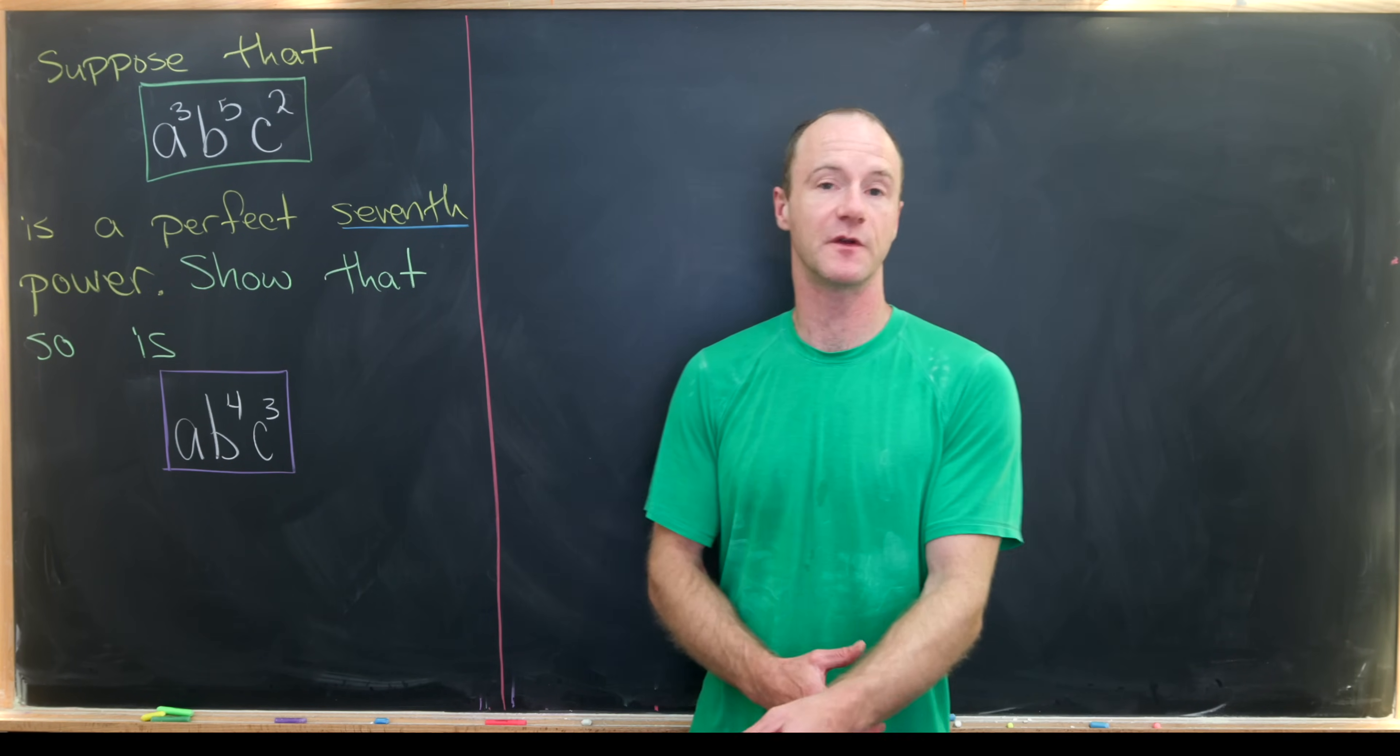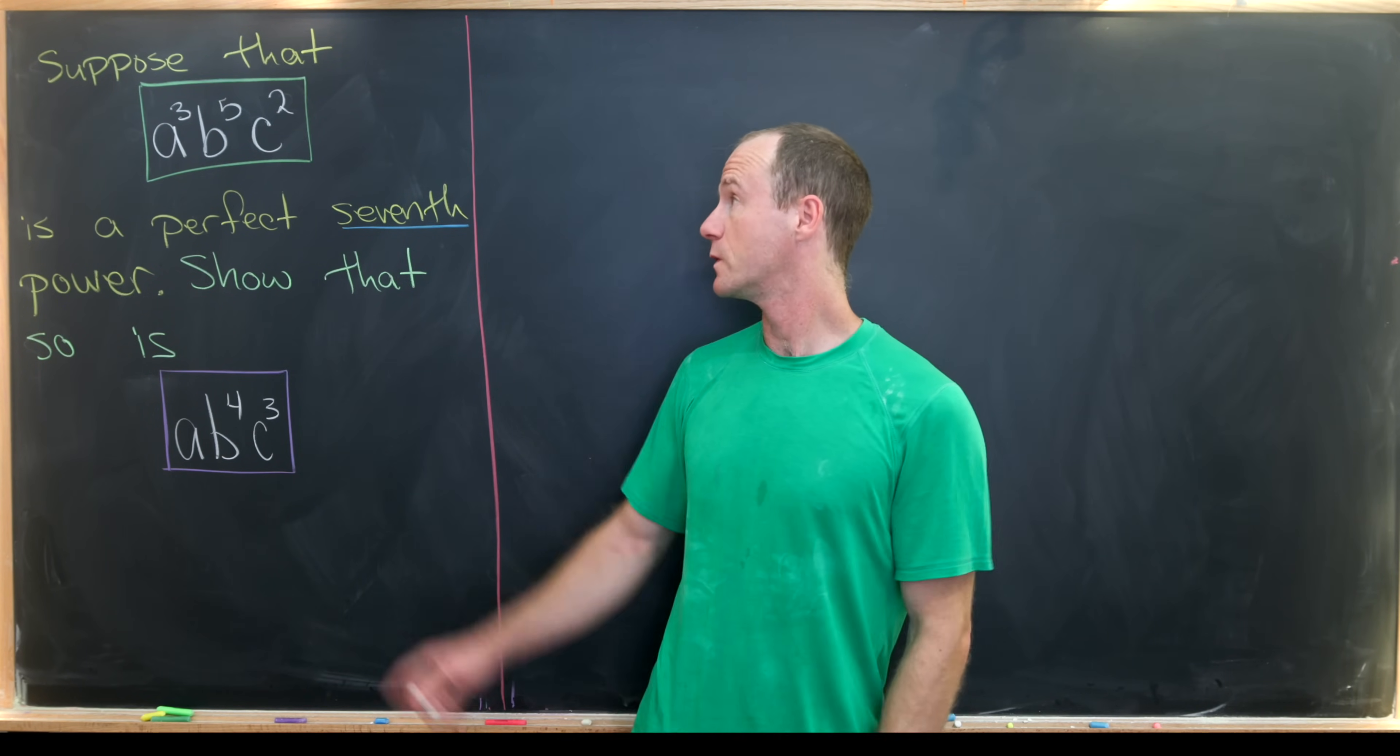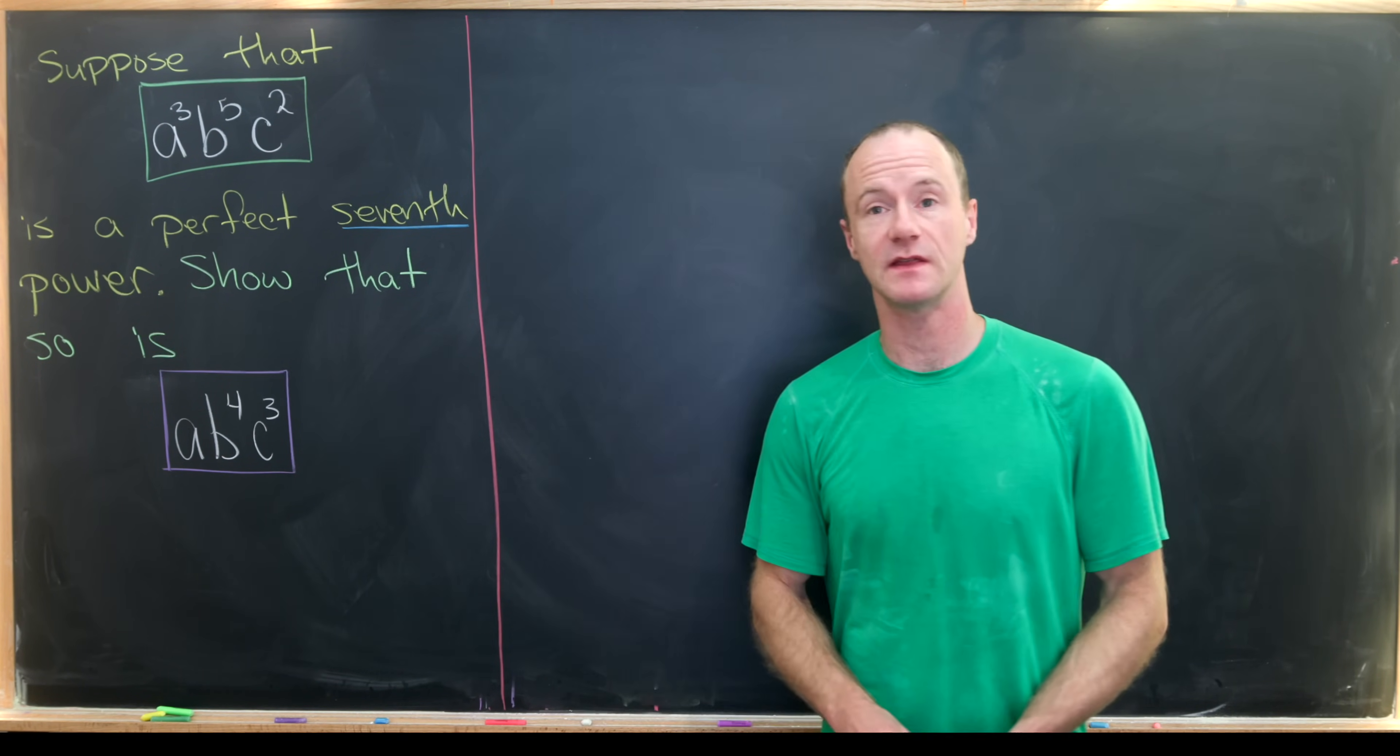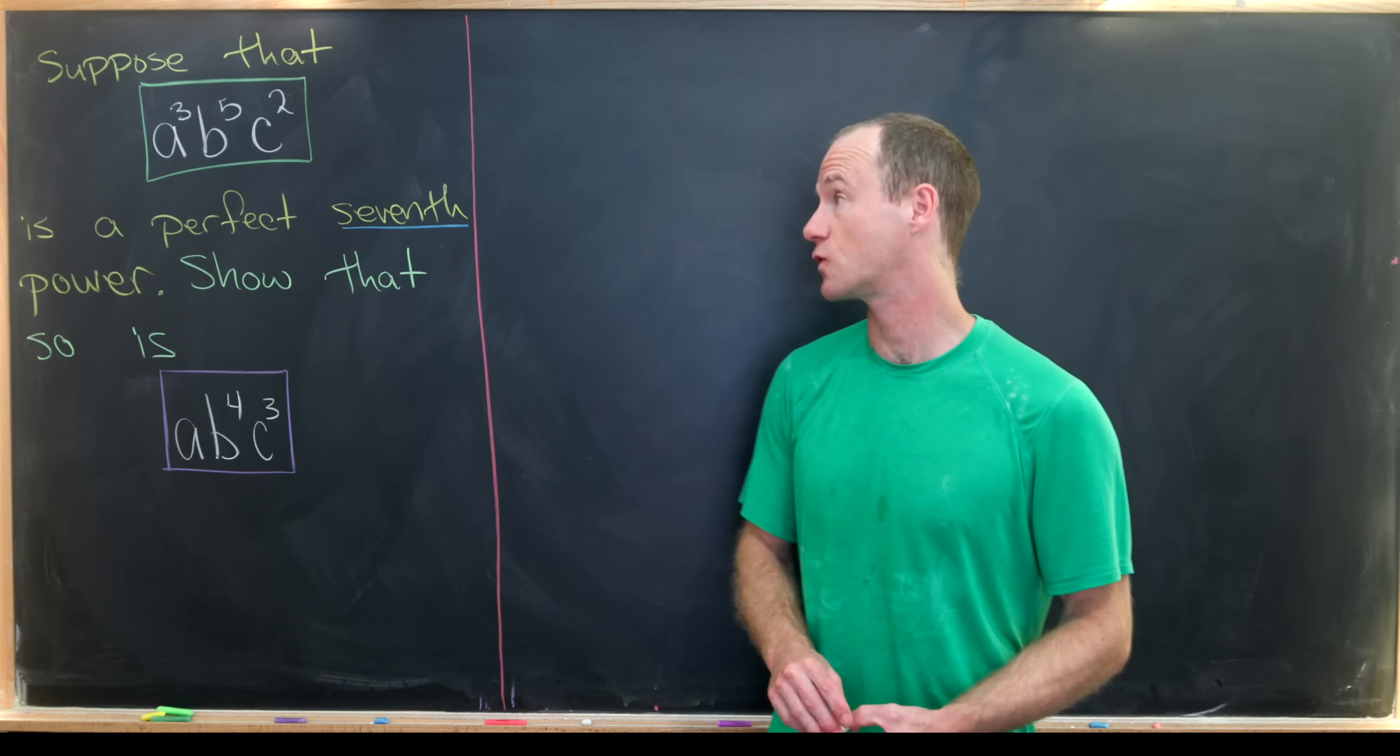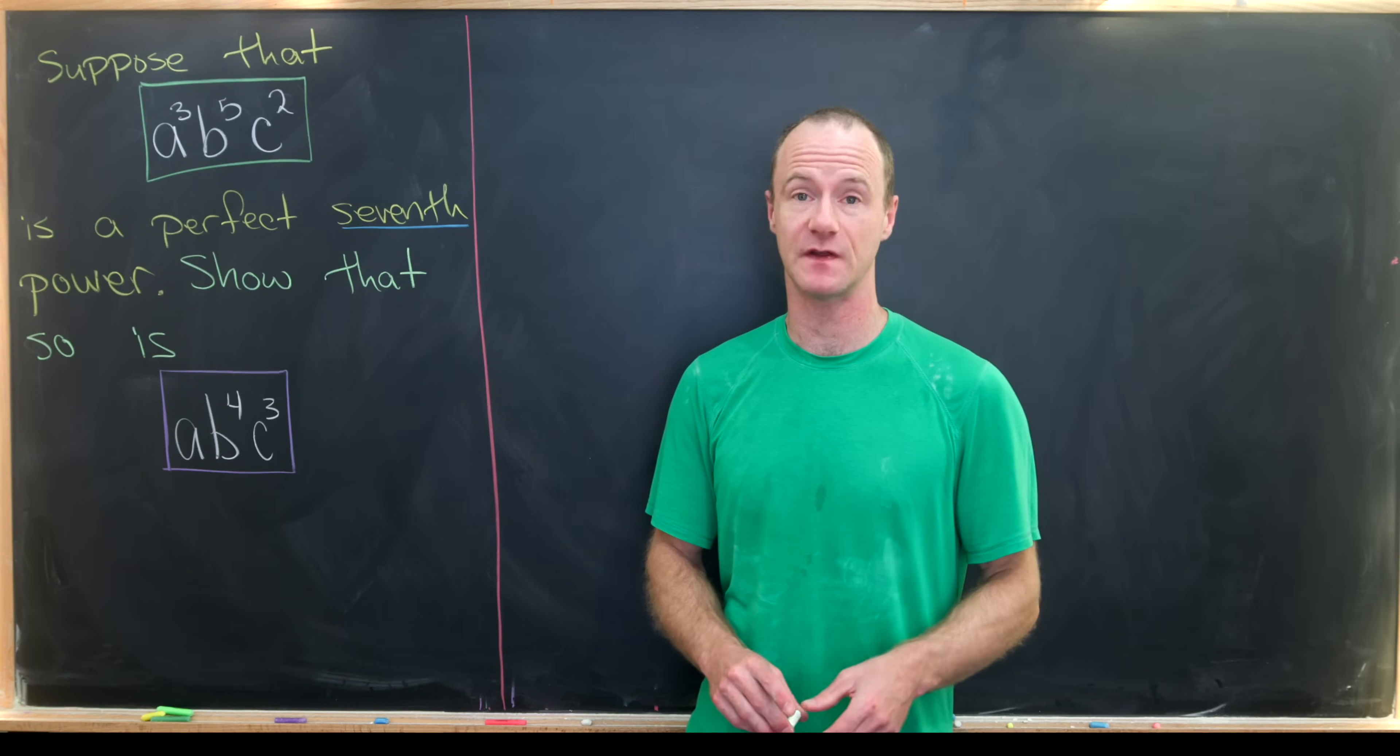Today I want to show you guys a nice little number theory problem. We want to start off by assuming that a cubed times b to the fifth times c squared is a perfect seventh power.